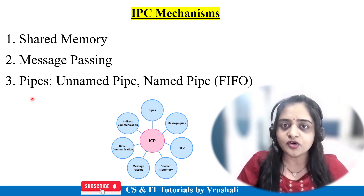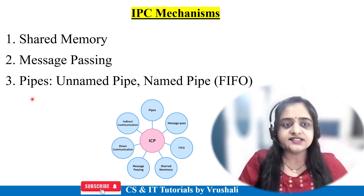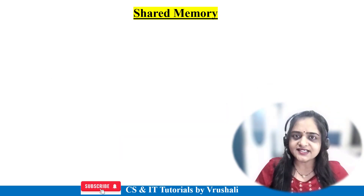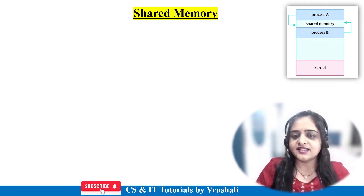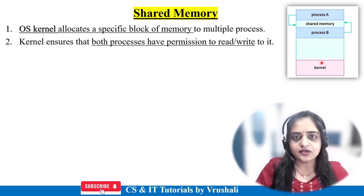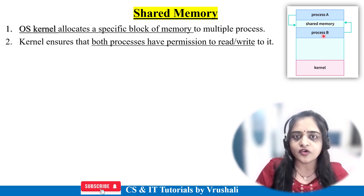Now let's understand shared memory in a simple way. In this diagram, shared memory has three components: Process A, Process B, and Kernel. The work of the operating system kernel is to allocate a particular memory to these processes for performing operations.